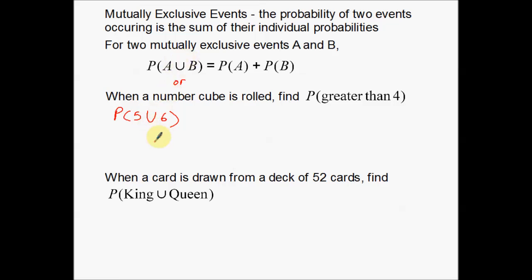So what we're looking for is the probability of getting a number greater than four, which on a number cube, that's either a five or a six, using this little symbol for the or word here. So either a five or a six is what I'm looking for. So what I'm going to do is, since these are mutually exclusive events, when you roll a number cube you can either get a five or you can get a six. You can't get both.